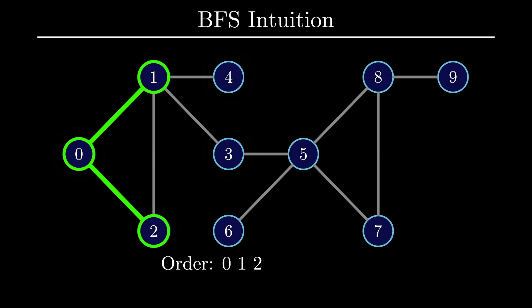After visiting all distance 1 vertices, we then continue with the natural progression and visit all distance 2 vertices. And this continues until we visit all vertices of the graph.